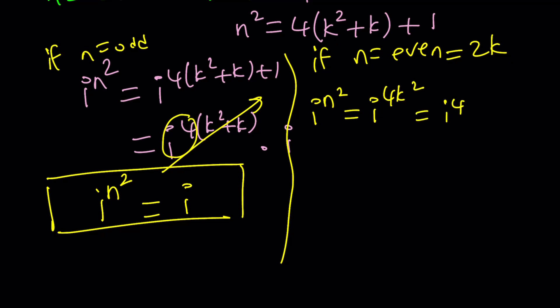And 4k squared is a multiple of 4. So we can kind of write it as i to the fourth to the power k squared, where k is an integer. And i to the fourth is always 1, right? So this is going to be 1. So i to the n squared is going to be 1 if n is even. Make sense?